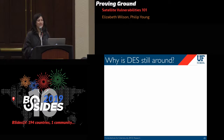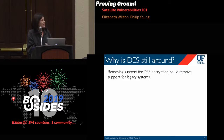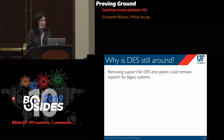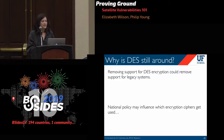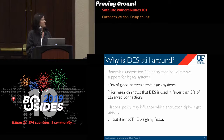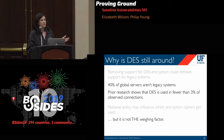Why is DES still being used? We had a couple of ideas: one is that removing DES support could remove support for legacy machines, and two, national policy might influence which encryption ciphers get used. But these aren't compelling reasons. 40% of global servers aren't all legacy — prior research showed at most 1.4% of connections actually used Triple DES, so why do 40% of servers need to support it? And national policy might influence what a country does within its borders, but its neighbors are not beholden to those encryption policies.